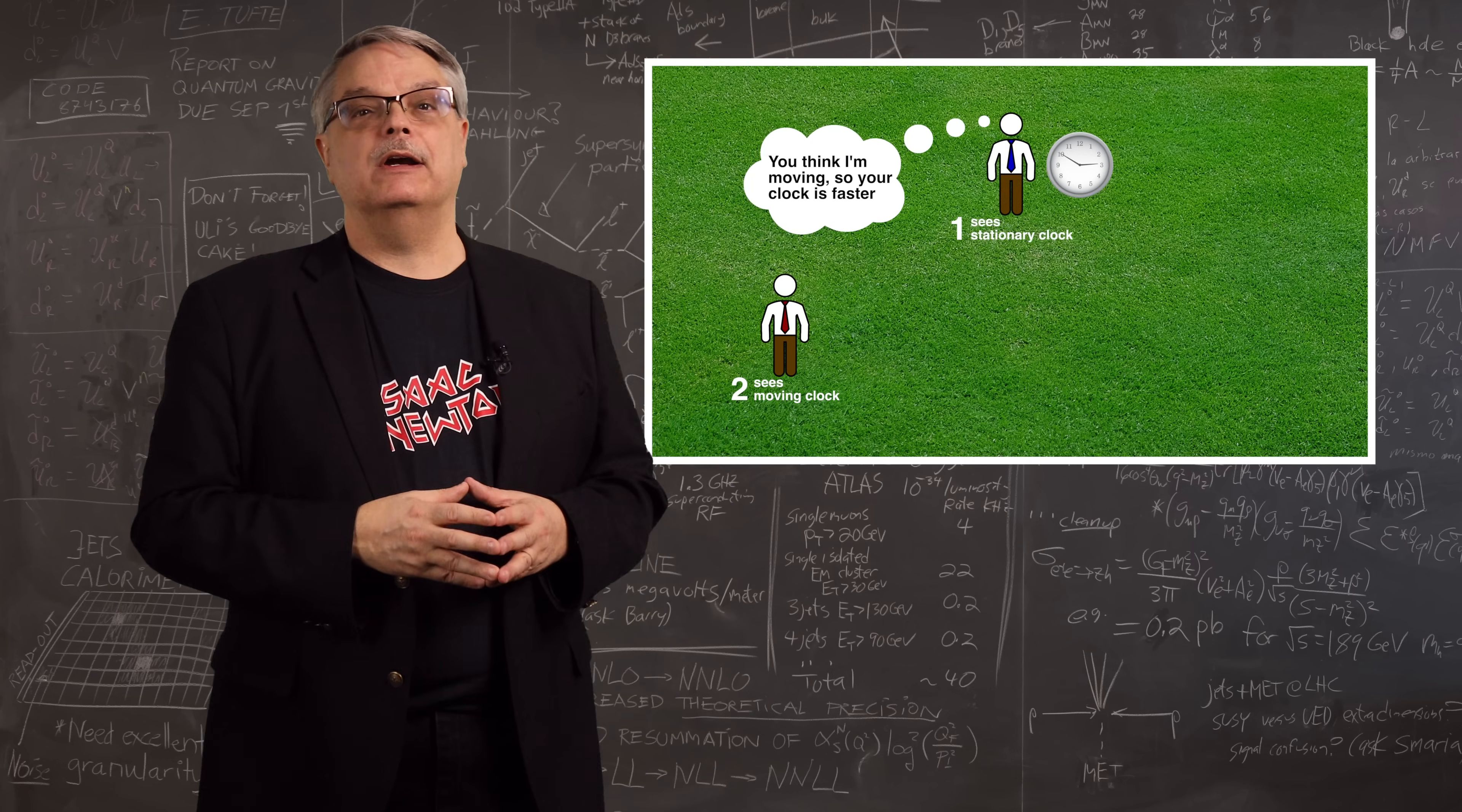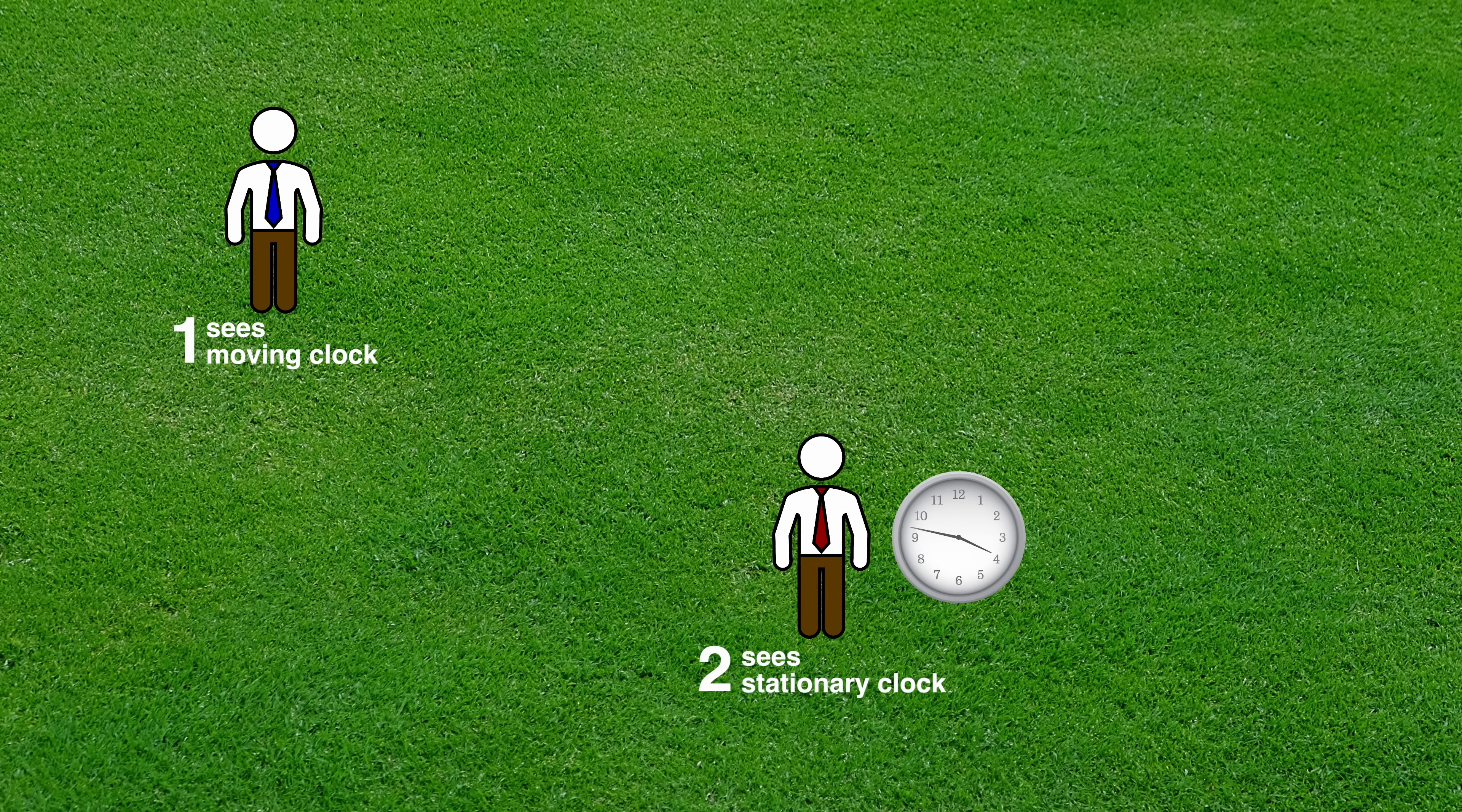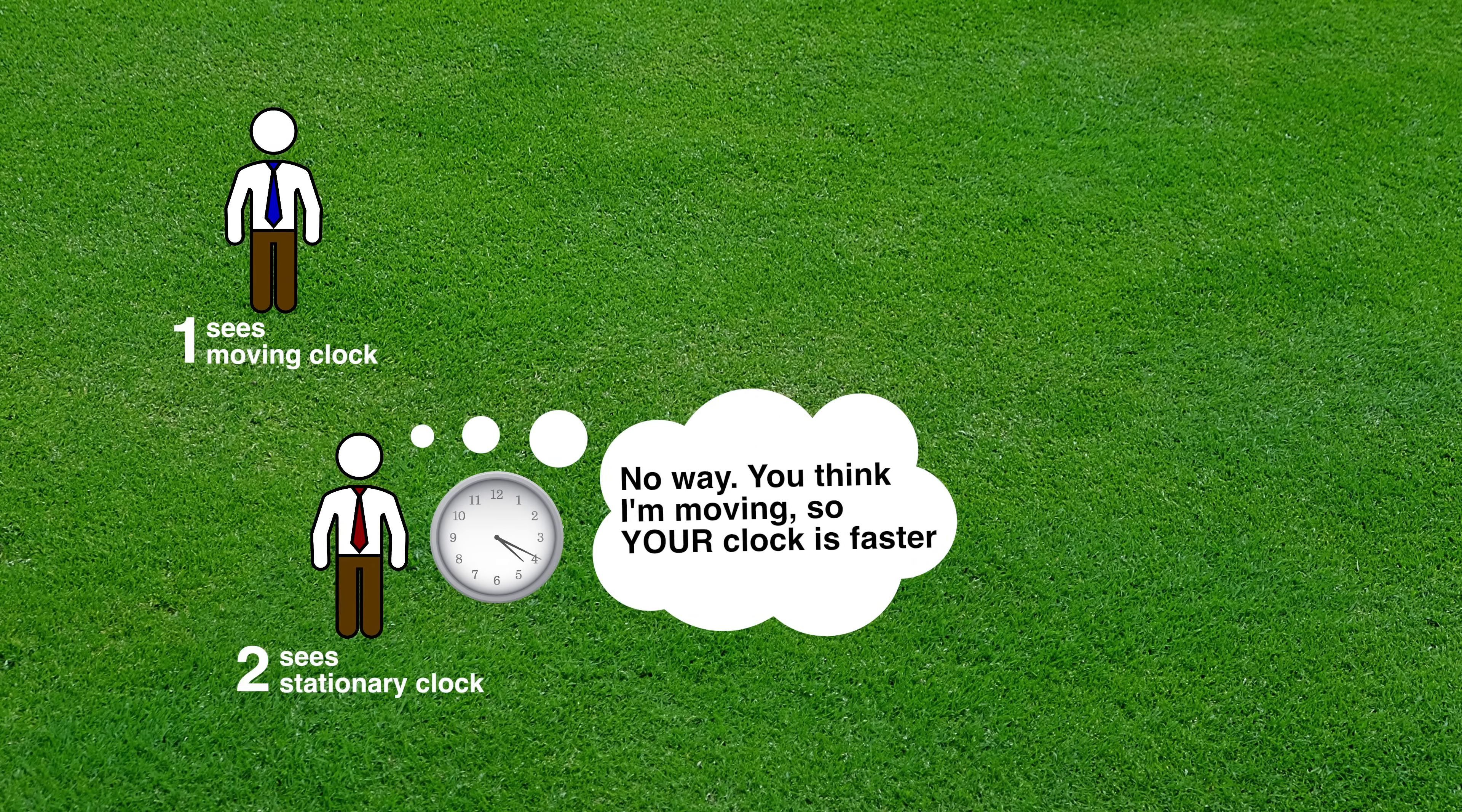However, relativity requires that the laws are the same, no matter who is not moving, and this poses a problem. Suppose that we say number 2 is stationary with respect to his clock, and number 1 says that the clock is moving. Then number 1 experiences a longer time.